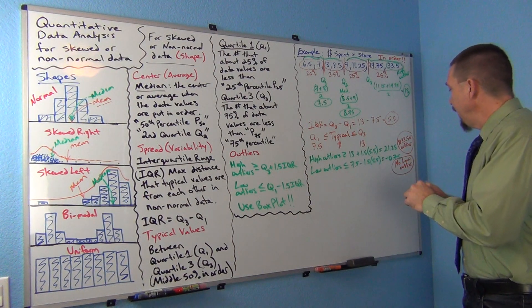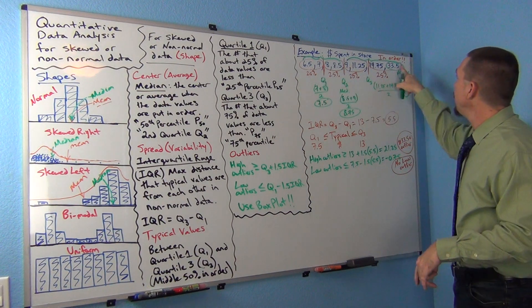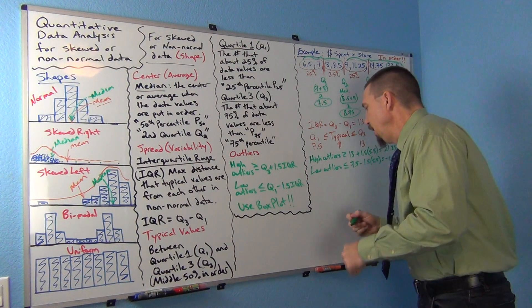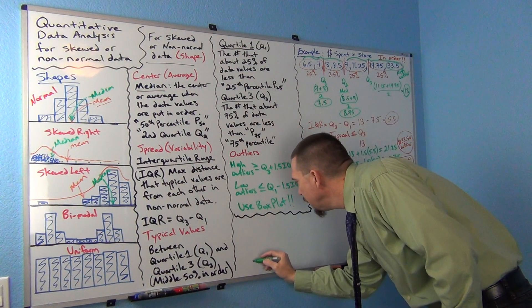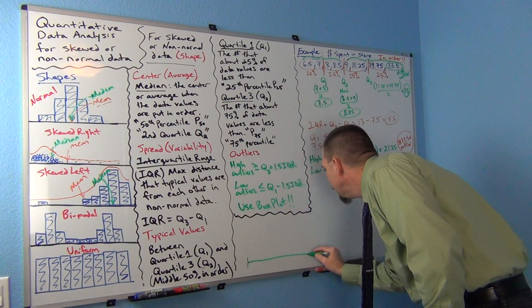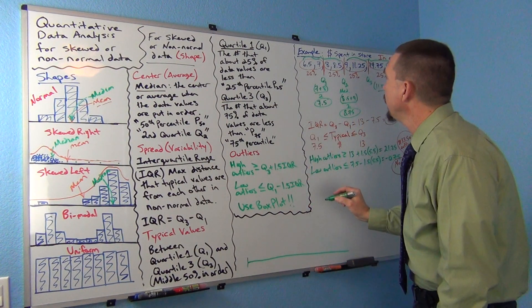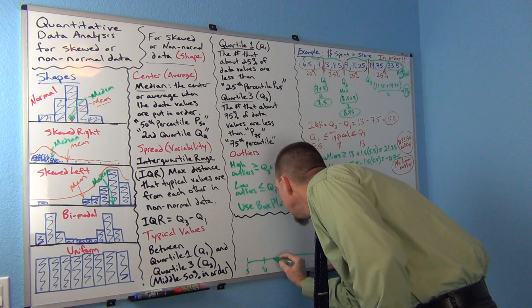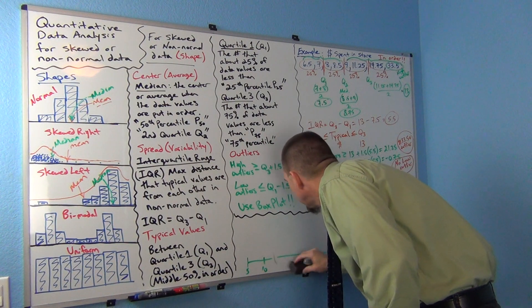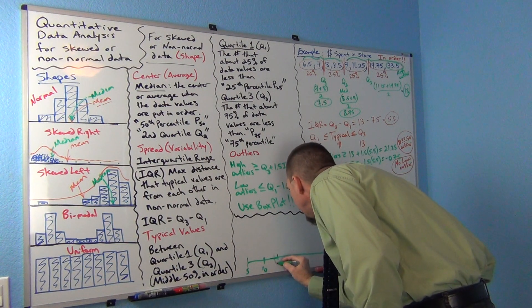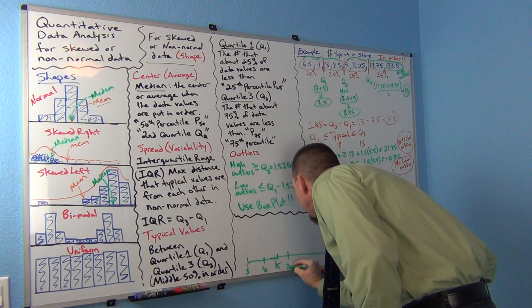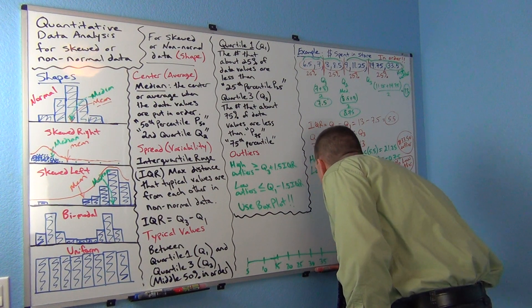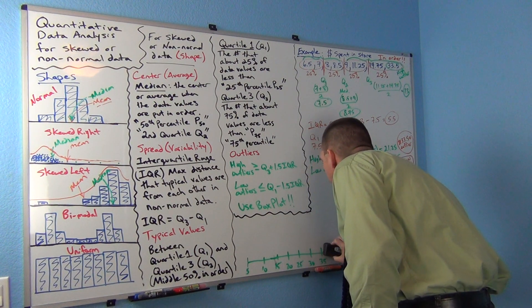So just a couple things. We have the data goes from 6.5 to 33.5. So I'm just going to make a number line for that. So here's $5, 10, 15, 20, 25, 30, 35. How's that? Let's kind of make a number line here.